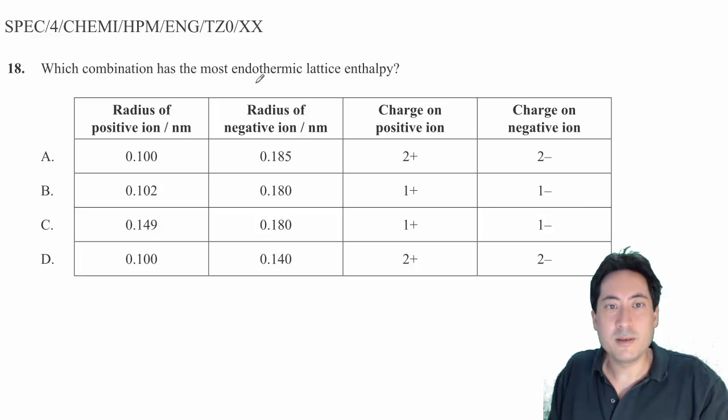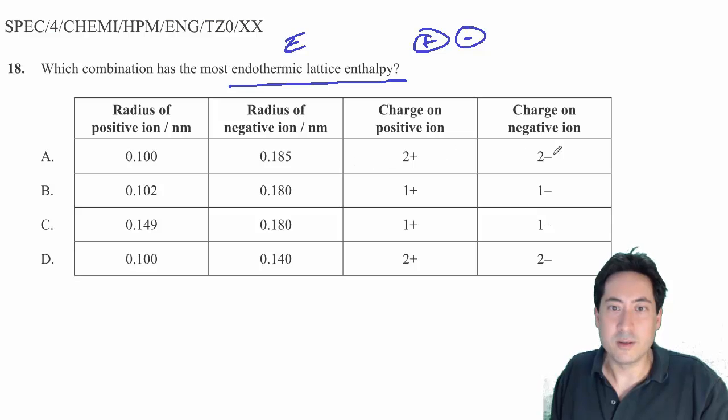Which combination has the most endothermic lattice enthalpy? That means which one's going to take the most energy to break it. What we want is things that are really small and really positive and really negative.